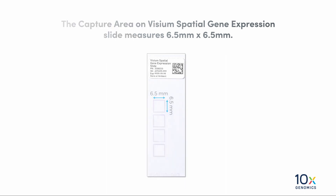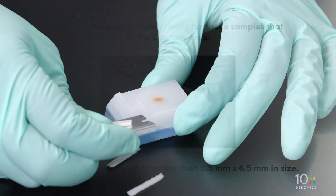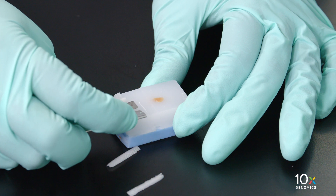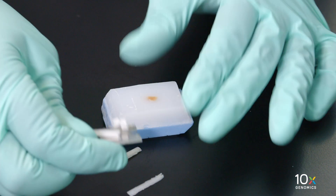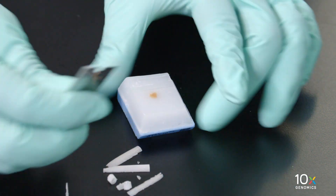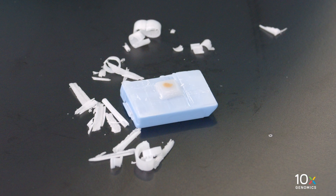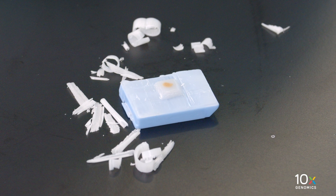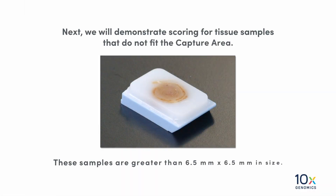First, we will demonstrate scoring for tissue samples that fit the capture area. These samples are equal to or less than 6.5 millimeters by 6.5 millimeters in size. After facing, remove the tissue block from the microtome and start trimming. Using a razor blade, remove excess paraffin from around the tissue so it is not larger than the fiducial frame. Retain paraffin edges around the tissue samples to enhance tissue attachment to the slide.